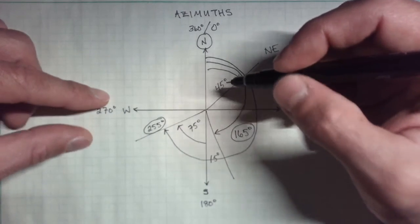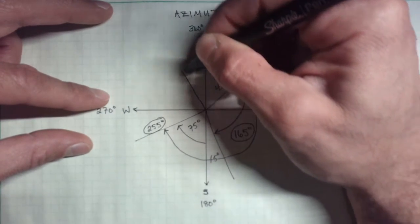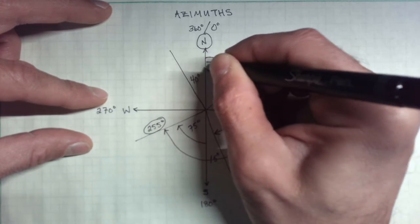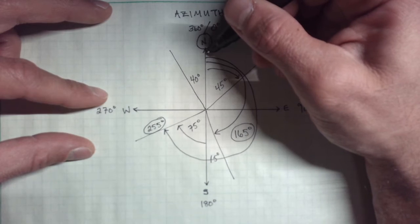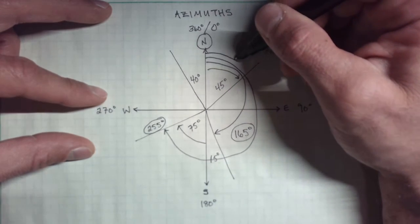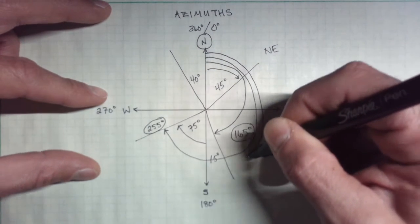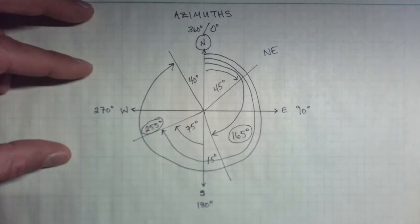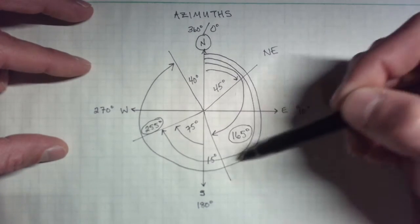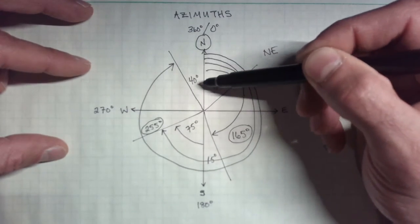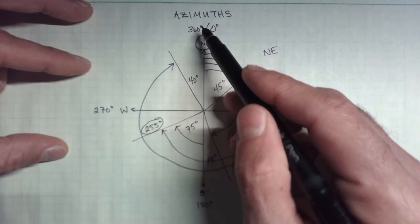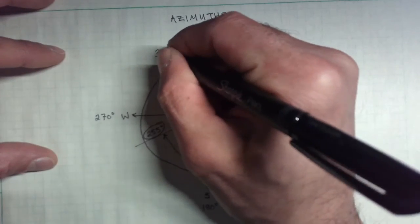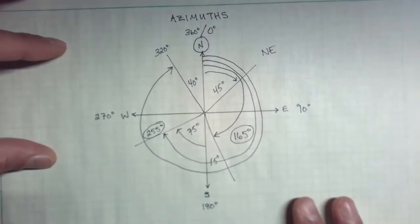In the northwest quadrant, we had a line that was 40 degrees west of north. The azimuth has to be read from the north all the way clockwise around the circle until we hit that line. So I've gone all the way around the circle except for 40 degrees, meaning 360 minus 40 degrees gives a 320 degree azimuth for that line.